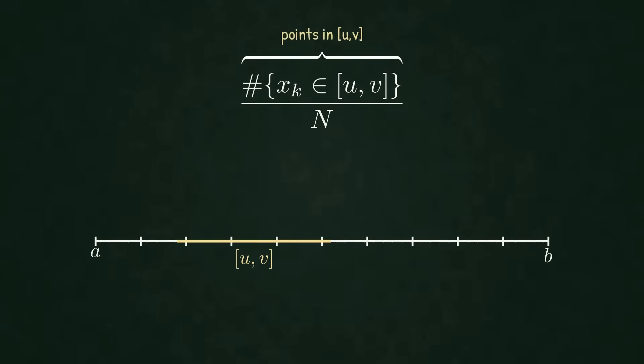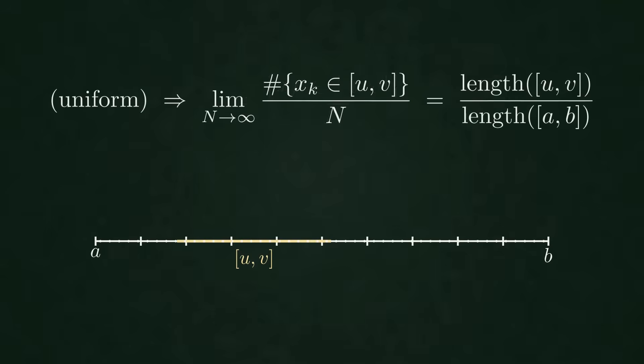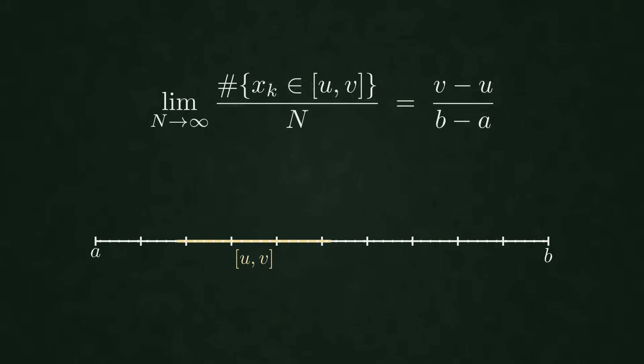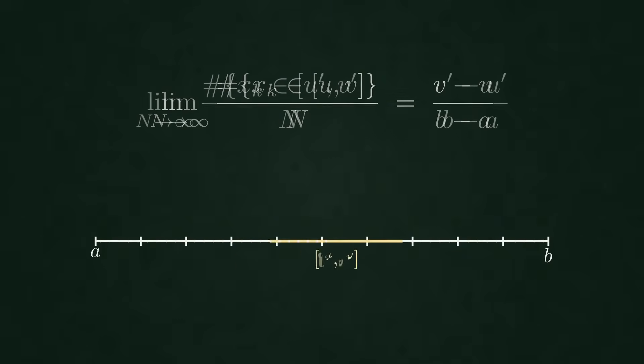And compare that to the total number n. If this proportion settles to the ratio of lengths, where we define the length of an interval by the difference between the end point and its starting point, we say that the sequence is uniform on the interval between a and b. And this is not a statement about a single interval. The same limit must hold for every choice of sub-interval. The proportion must always match its share of length.